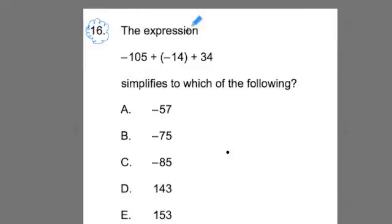Number 16, the expression -105 + (-14) + 34 simplifies to which of the following, and then they give us options. Notice how in these options some of the values are negative and some are positive. So there's a fork in the road here. If you know when adding these up that you're going to get a negative value, you could automatically cancel off two of these answers and really increase your chances of getting this problem correct.